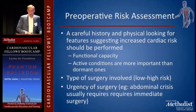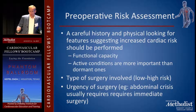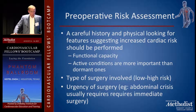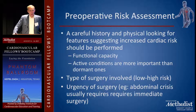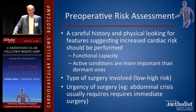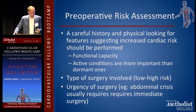A careful history and physical looking for features suggesting increased cardiac risk should be performed. You should look at functional capacity. Active conditions are obviously more important than dormant ones — if you have a heart attack now, that's obviously more important than having one six months ago. Type of surgery, low versus high risk, and the urgency of the surgery matter. An abdominal crisis usually requires immediate surgery without further workup.